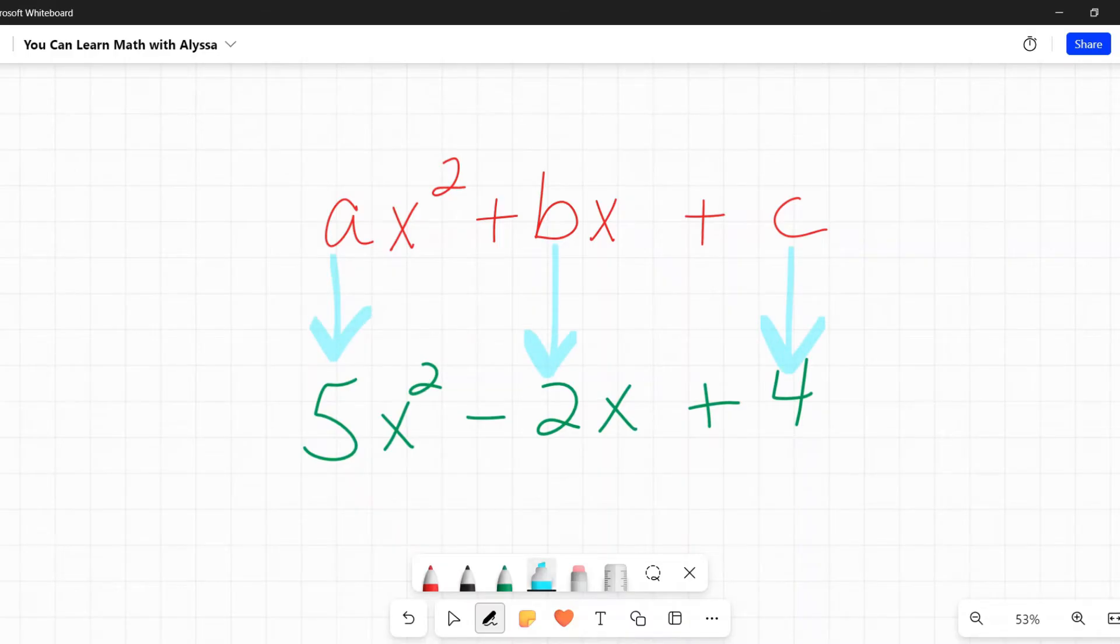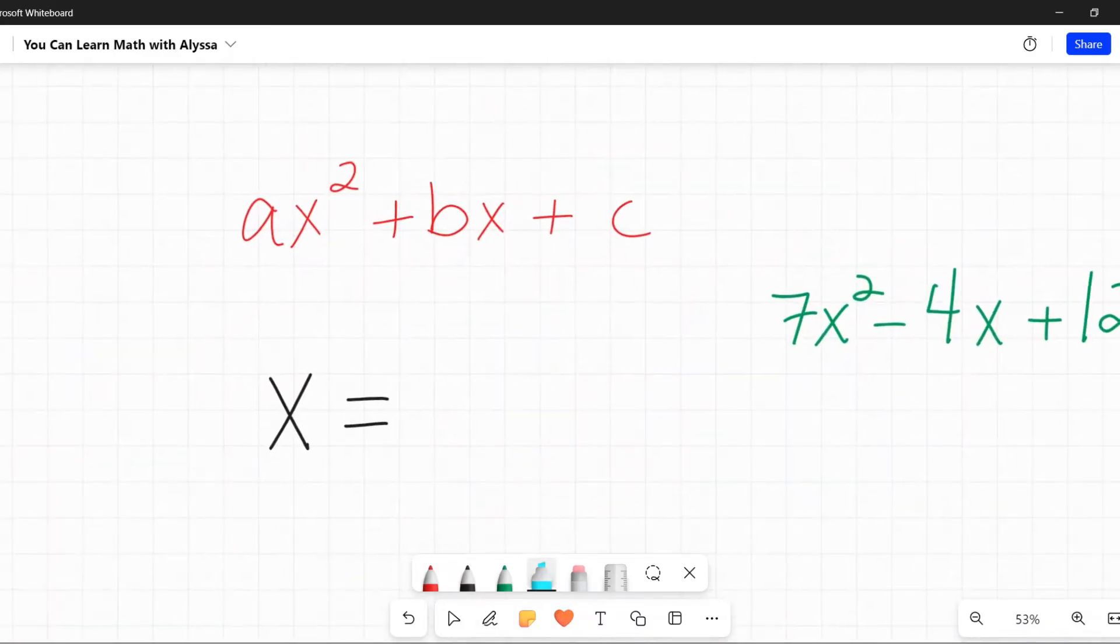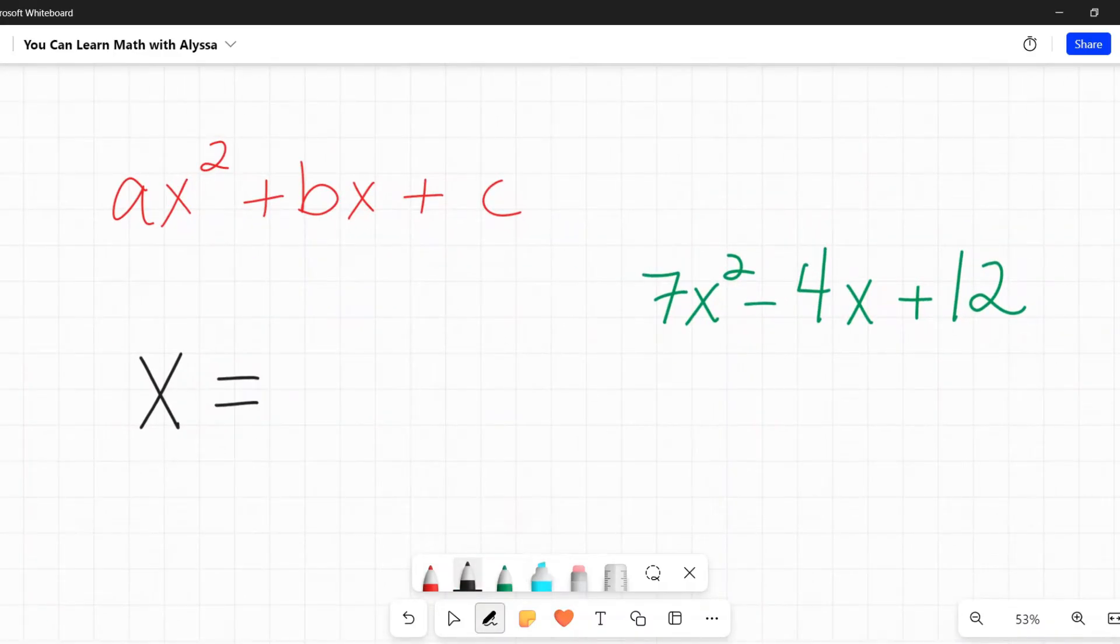Using that information, we can use the axis of symmetry formula. It is that x equals negative b over 2a, the a and b in this case being that a and b we just saw from that quadratic equation.